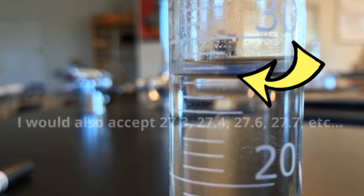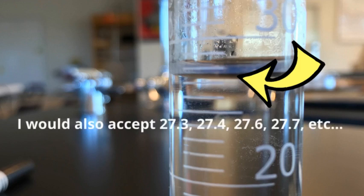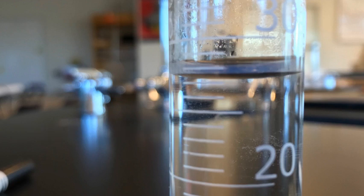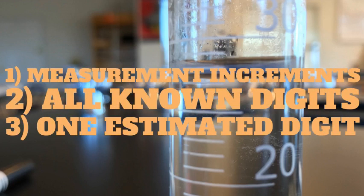Normally, if I'm not quite sure if it's right between the two numbers, I'm going to estimate a five because it looks to be pretty much right in the middle. But that is up to you. That's up to the scientist. Is it closer to 27? Or is it closer to 28? Or is it right in the middle? So again, every scientific measurement needs requires you to know the increments of your measuring device. It requires you to write down all the known digits. And finally, you end it with an estimated digit, and you are done.